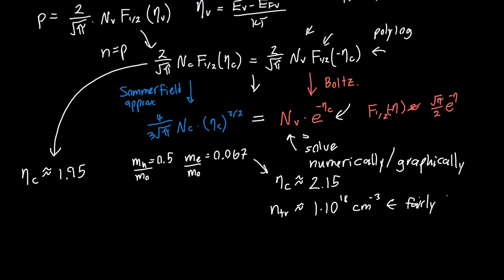This is for an nc and nv, or our effective density of states that correspond to the masses that I gave you just now. If we were to use the exact value of eta c instead, we'd get a transparency carrier density of about 1.2 times 10 to the 18 per centimeter cubed, so it's about 20% which is not tiny but also not too bad.